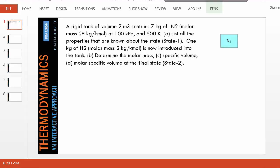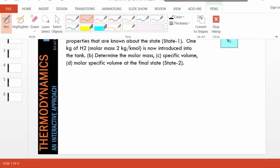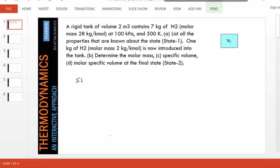Hello. In this problem, a tank contains a gas and we are supposed to find what properties are known about that state. Okay, so we'll call the state State 1 and list all the properties that are known. As you can see, the volume of the tank is given. The mass of nitrogen is known, and we are also given pressure and temperature.